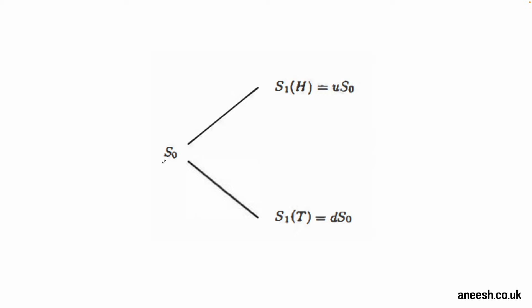On the first page of the book, we're introduced to the one-period binomial model where the value of S0 represents the price of the stock today and the price of the stock at time 1, tomorrow, is denoted by S1H and S1T.